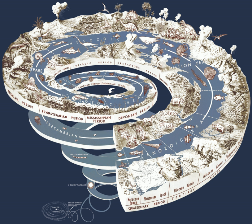Cosmogenic nuclide geochronology comprises a series of related techniques for determining the age at which a geomorphic surface was created, or at which formerly surficial materials were buried. Exposure dating uses the concentration of exotic nuclides produced by cosmic rays interacting with Earth materials as a proxy for the age at which a surface, such as an alluvial fan, was created. Burial dating uses the differential radioactive decay of two cosmogenic elements as a proxy for the age at which a sediment was screened by burial from further cosmic ray exposure.